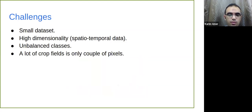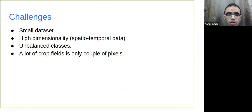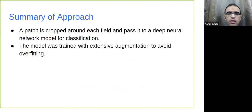The key challenges from the previous analysis: the dataset is small with only about 3,000 training samples; we have a time series of 13 images, each with 13 spectral bands; the classes are totally unbalanced; and the crop fields vary in area, with some having only four or five pixels. My approach summary was to crop a small patch around each field and pass it to a deep neural network for classification. The model was trained using extensive augmentations to avoid overfitting.